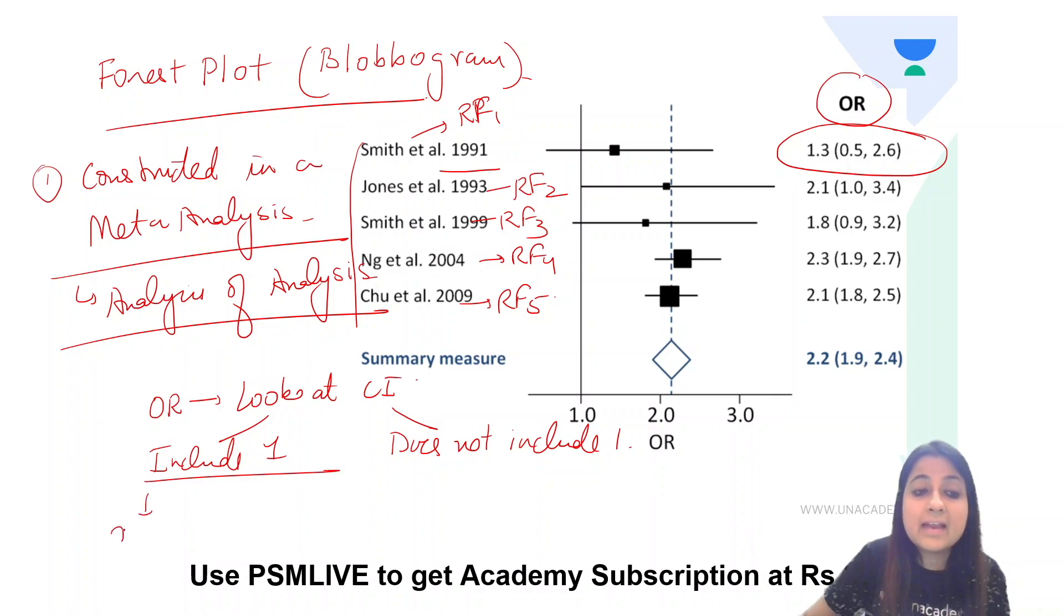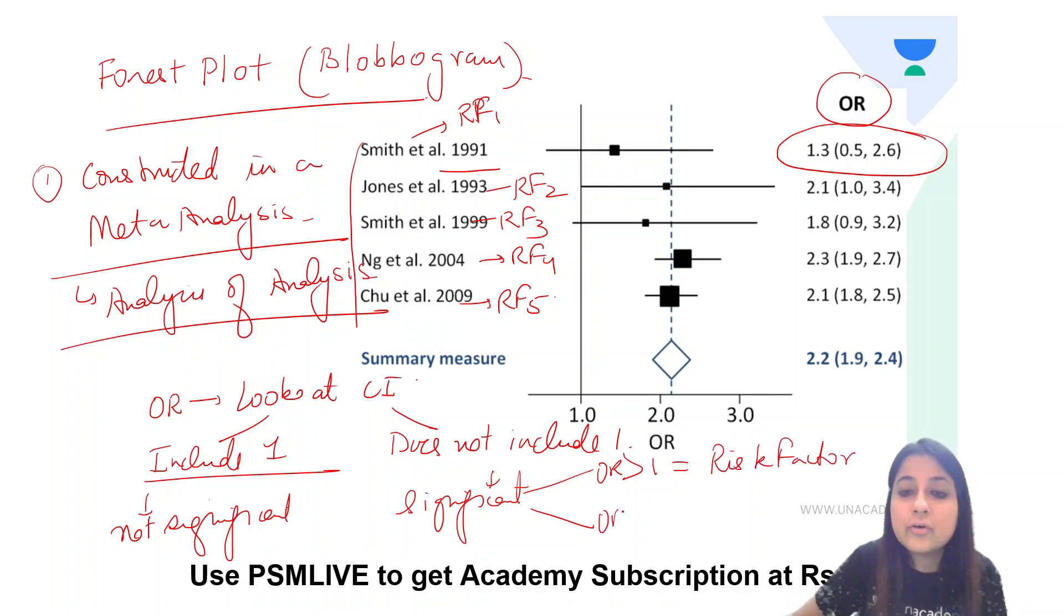If it includes one, it is not significant, everyone. But if it does not include one, it is significant. If the odds ratio is then more than one, it is a risk factor. And if the odds ratio is less than one, it is a protective factor or an inverse association.